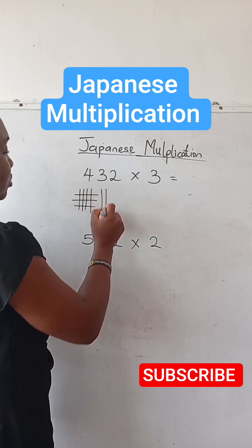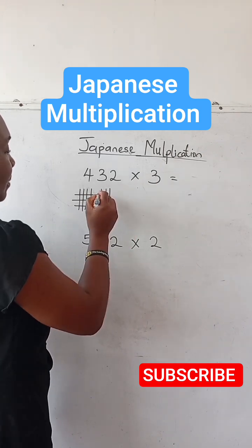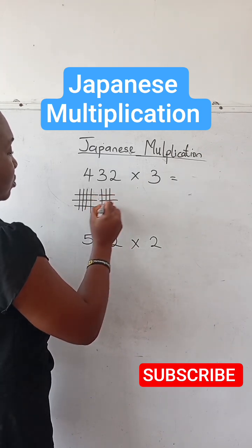Let's come here, count your 3 strokes. Multiply by 3. 1, 2, 3.